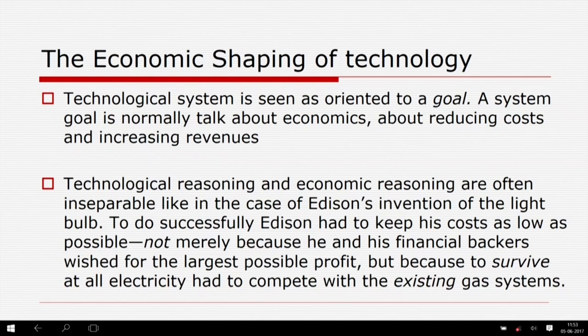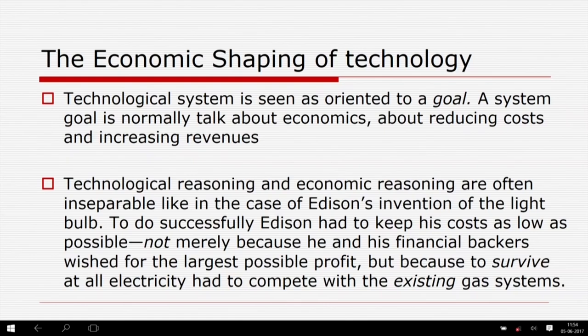The very concept of reverse salient makes sense only if a technological system is seen as oriented to a goal. In the evolution of technology, economics is deeply embedded — economic goals are deeply embedded. As Hughes pointed out, the technological system is seen as oriented to a goal, to an objective, to an aim. It must aim towards certain social needs or economic needs, keeping the market in mind.